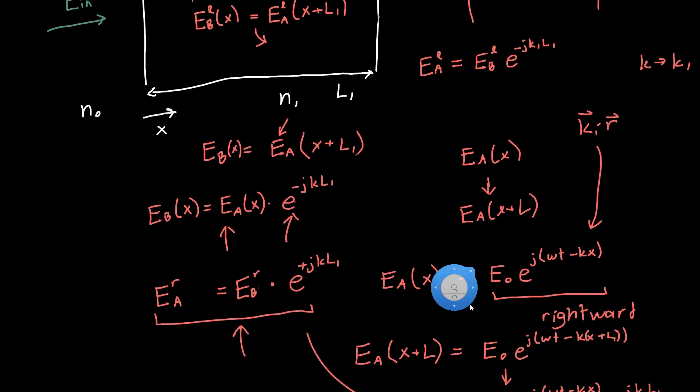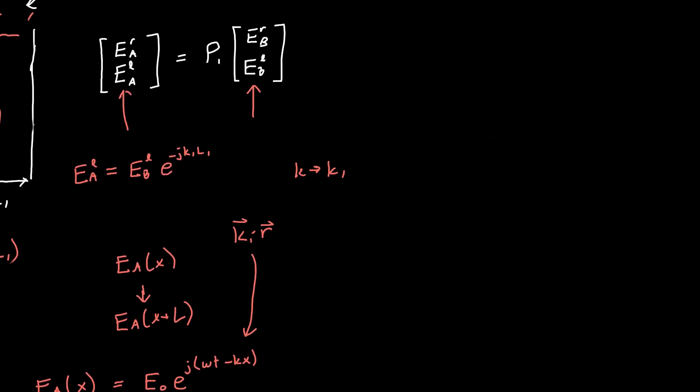From this equation, it becomes pretty clear that instead of multiplying by E to the plus JKL1, we now need to get the relationship between EA and EB that we want. We see that EA is equal to EB, and these are the leftward traveling waves, times E to the minus JKL1. If we're being precise, all these K's should be K1, because K is going to change depending on which layer that you're in. So we've got the two equations that we need.